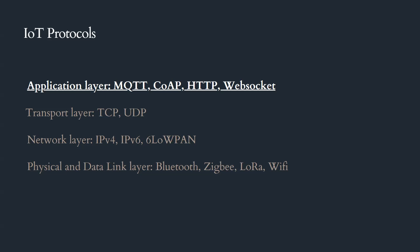We are in the second section, which is the IoT protocols. There are many protocols, so we divide them into different layers. In the last class we talked about physical and data link layer protocols — Bluetooth, ZigBee, LoRa, and Wi-Fi. Then we talked about network layer protocols: IPv4, IPv6 addressing, and the 6LoWPAN protocol. We also covered transport layer protocols: TCP and UDP.